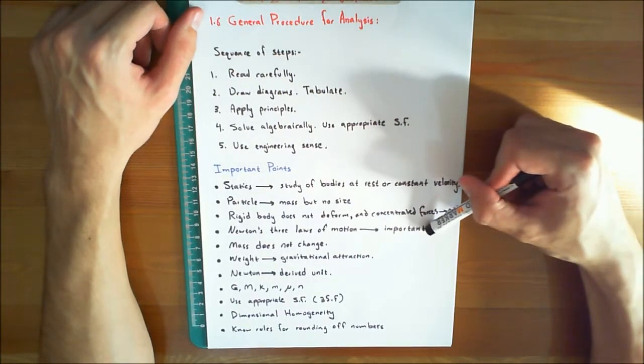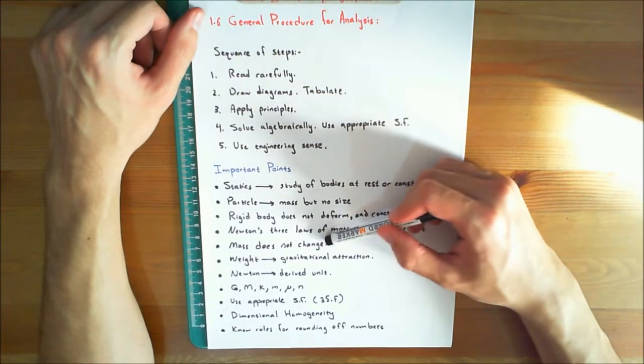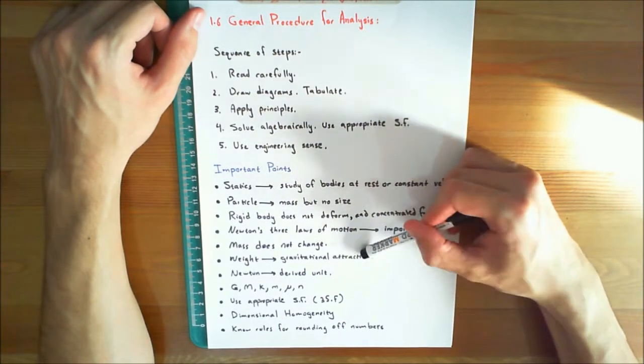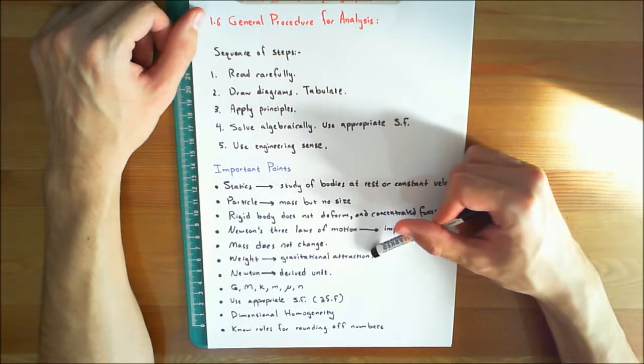Newton's three laws of motion must be memorized using the keywords mentioned in the previous videos. Mass is a property of matter that does not change from one location to another. Weight refers to the gravitational attraction of the Earth on a body or quantity of mass. Its magnitude depends upon the elevation at which the mass is located.